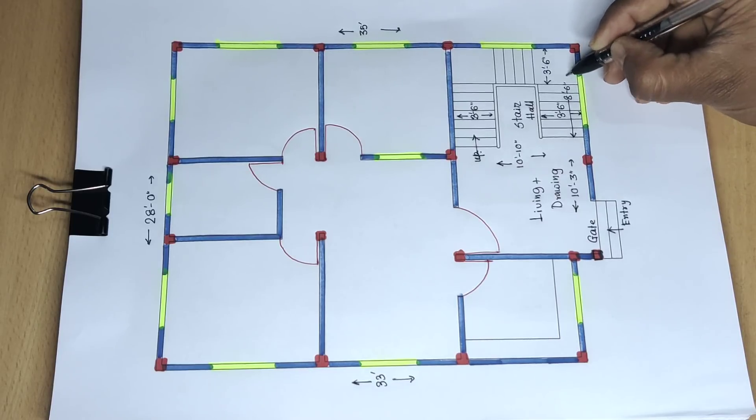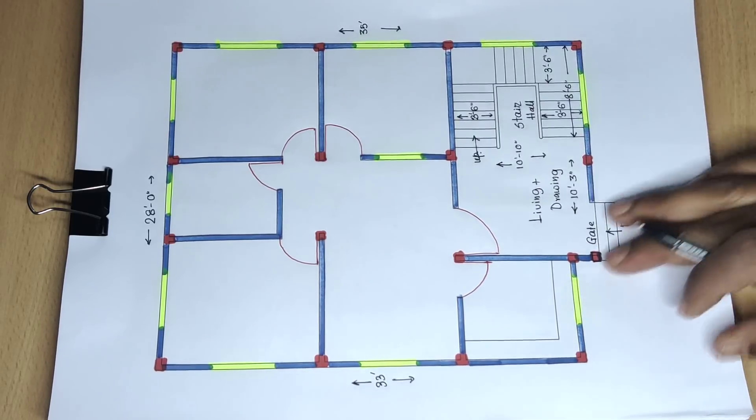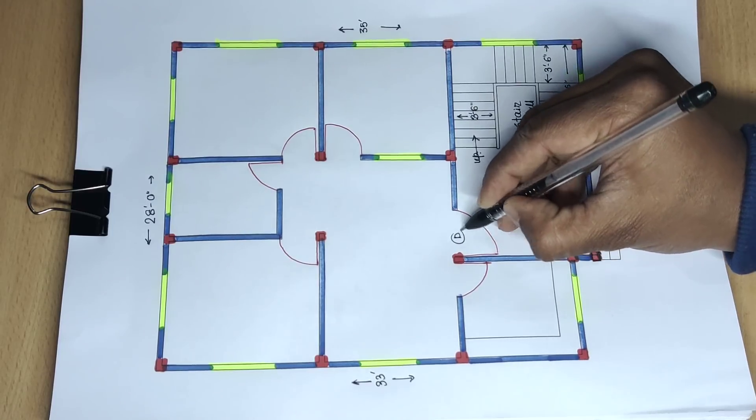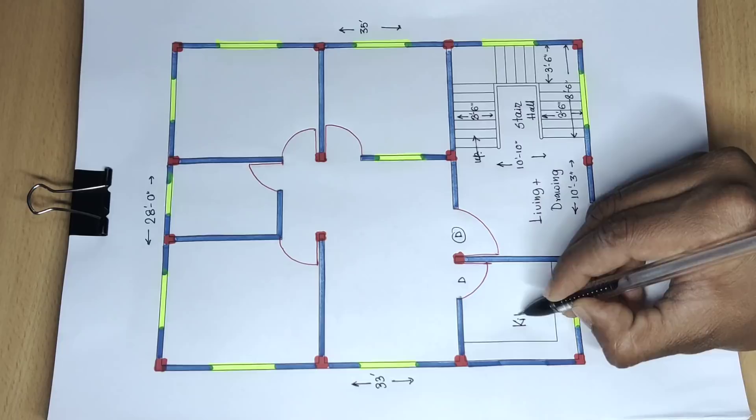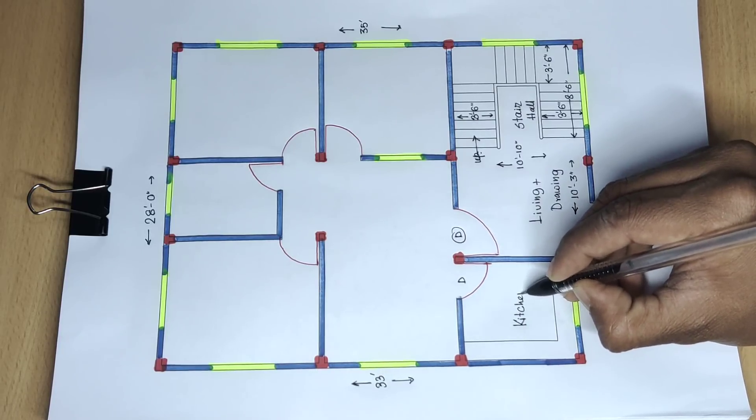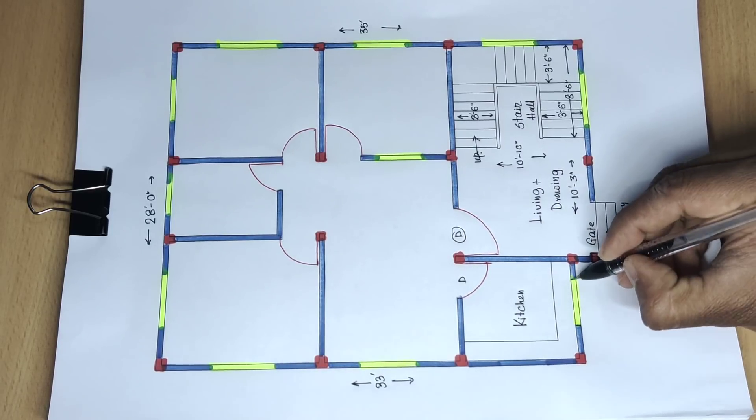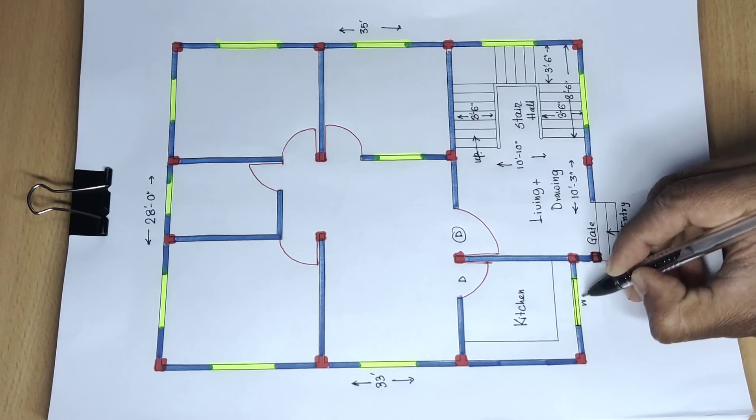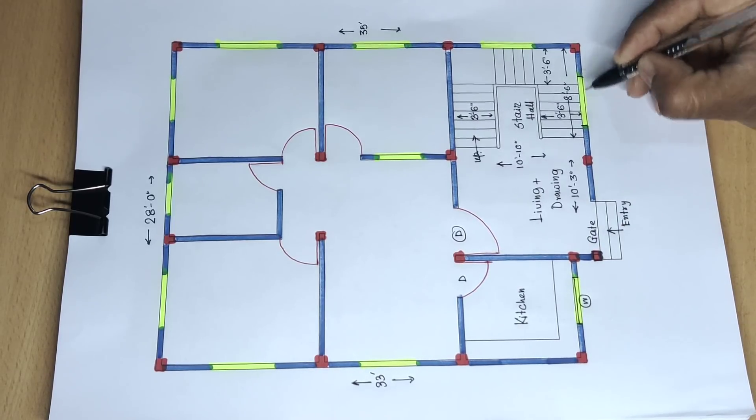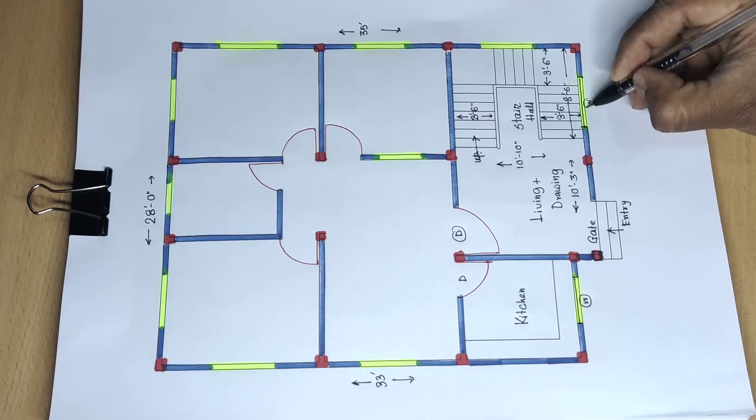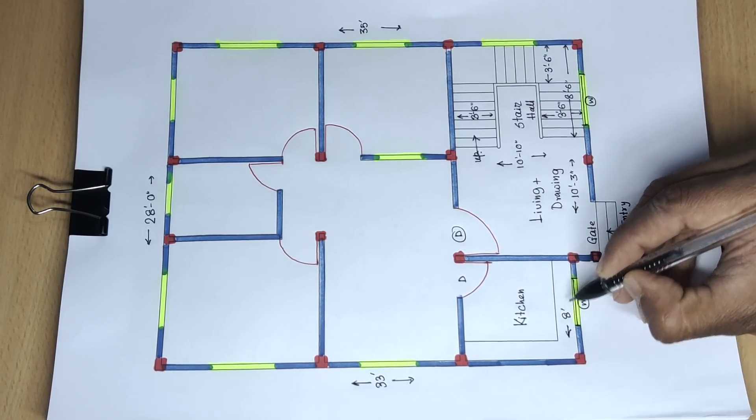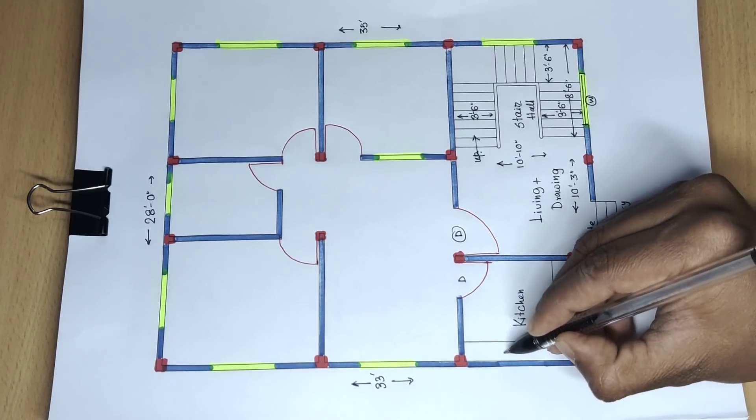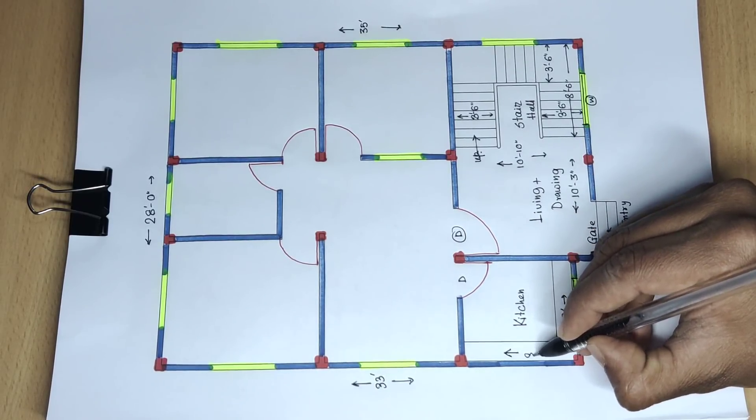6 inch total width. Here is the living room door. This is the kitchen room with an optional window. Kitchen side distance is 8 feet, and this side distance is also 8 feet.